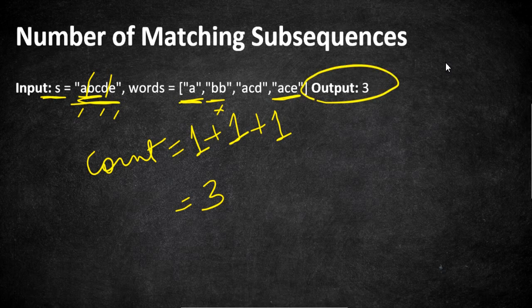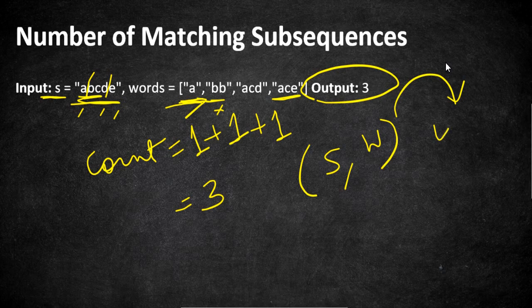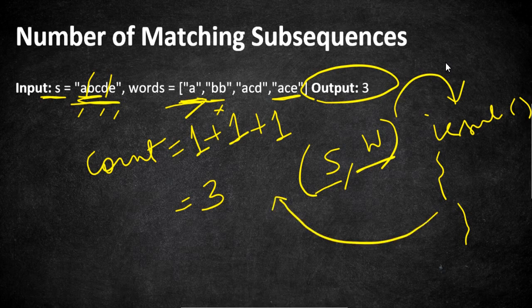How are we going to approach this? The simple brute force approach is to iterate the given words in the array and pass both string s and the iterated word w to a method called isSubsequence. This method will determine whether the word is a subsequence of s and return true or false. Based on the result we increment our count and return the result.